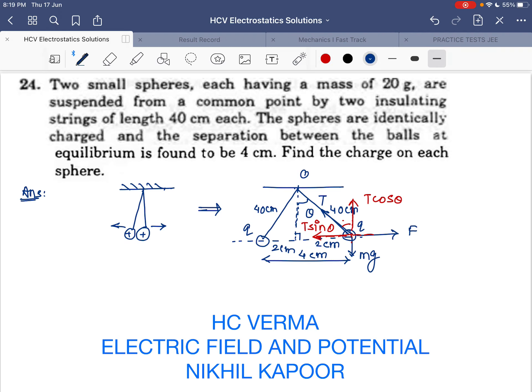T sin theta is balancing the electrostatic force between the charged bodies, while T cos theta is balancing the weight of the balls. We don't require T here, so we're going to divide equation one and equation two. On dividing, T sin theta over T cos theta equals F over mg. The T's cancel out.